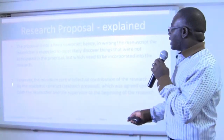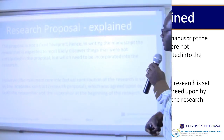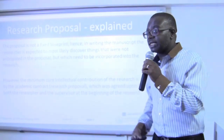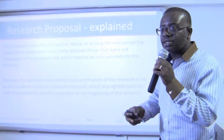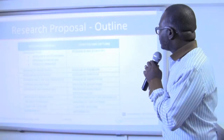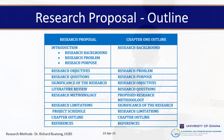The minimum core intellectual contribution of the research is set within your research proposal. There is a section called research significance that helps us understand the potential significance of your research and its implications if you should finish. A research proposal is an outline of what you are going to carry out. If you compare it carefully with your research chapter one outline, once your research proposal is accepted, it has a relationship with chapter one. The proposal has a number of different components.